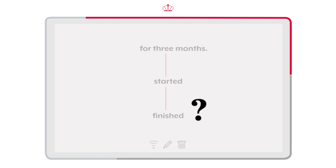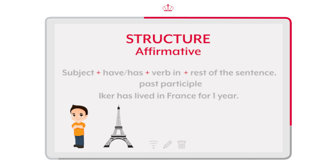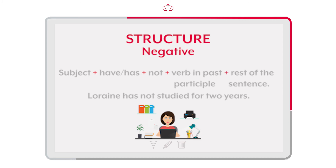Let's go and check the structure. As usual, we first have the subject, then we add 'have' or 'has' plus the verb in the past participle and the complement of the sentence. Como es usual, iniciamos con los pronombres. Después agregamos el verbo auxiliar, 'have' o 'has', más el verbo en pasado participio para finalizar con el resto del enunciado. Cuando se trata del negativo, iniciamos con el sujeto. Agregamos el auxiliar 'have' o 'has', más la palabra 'not', seguido del verbo en pasado participio y el resto de la oración.